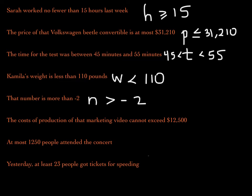The cost of production of that marketing video cannot exceed $12,500. Using C for cost, the cost must not be more than $12,500, but it can be equal to $12,500 — it cannot be more than that. So the cost must be less than or equal to $12,500.